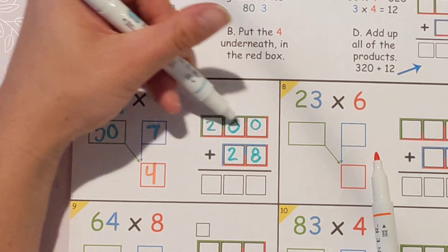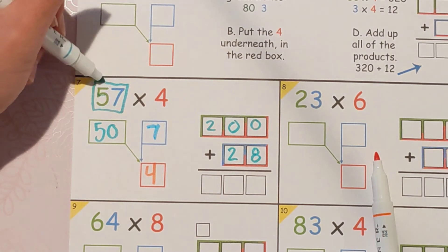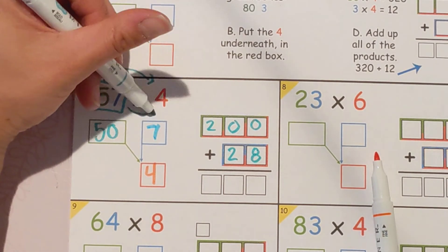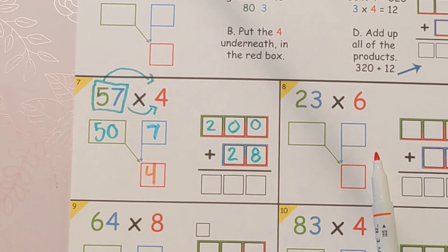So this right here is 50 times 4 and this right here is 7 times 4. So we did 50 times 4 and 7 times 4 meaning if you add it all together it'll be 57 times 4.